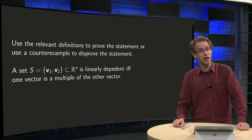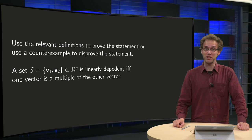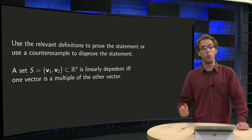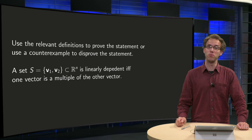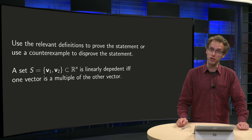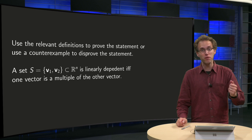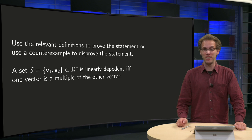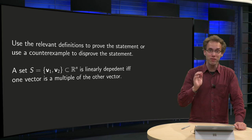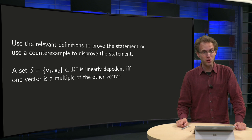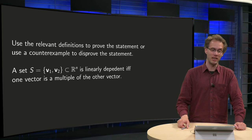Geometrically, it is clear why a set of two vectors is dependent if and only if one of the vectors is a multiple of the other. But can you prove this rigorously? Give it a try and see in this video whether you did it correctly.